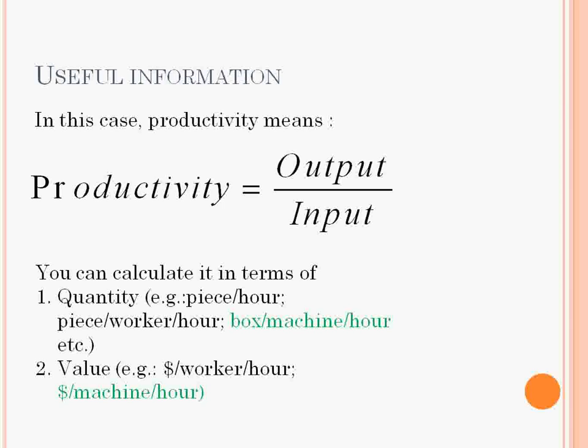You can express it in terms of quantity or value. If we are talking about productivity in general, time dimension is always very important. We can say things like: productivity is 100 pieces per hour of work or $100 per hour of work, and so on.